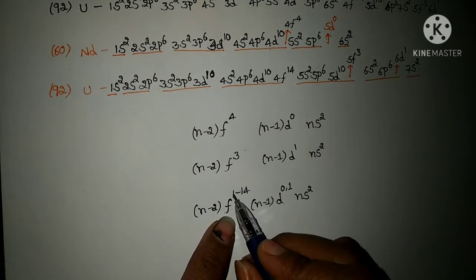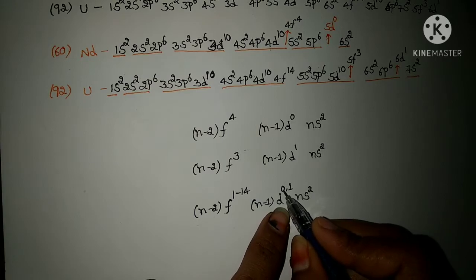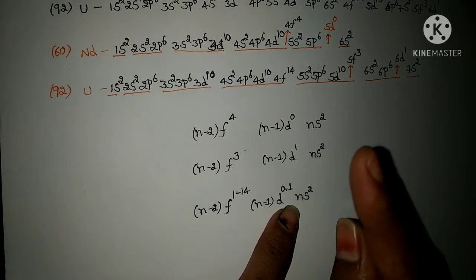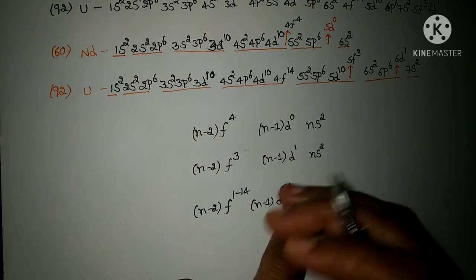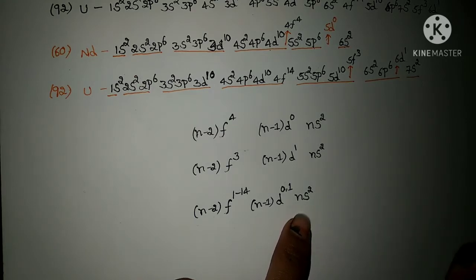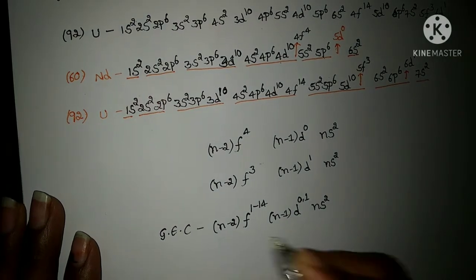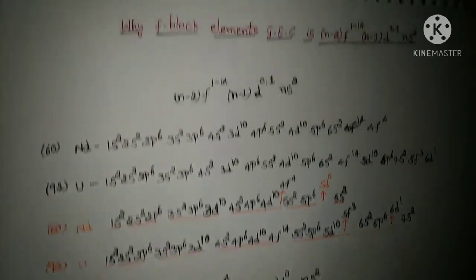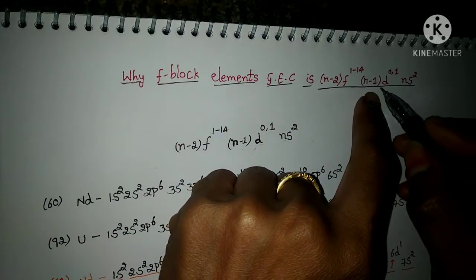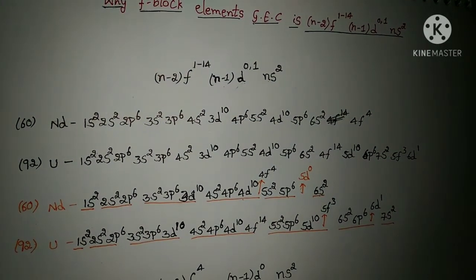So in summary: in the anti-penultimate shell of the f orbital, the electron number may be from 1 to 14; in the penultimate shell of the d orbital, it may be zero or only one electron; in the valence shell, two electrons are present in the s orbital. To get stability, electrons may transfer, but we are not going into that detail here. This is the general electronic configuration for all f-block elements: n minus 2 f 1 to 14, n minus 1 d 0 or 1, ns2. I hope you like this video — thank you.